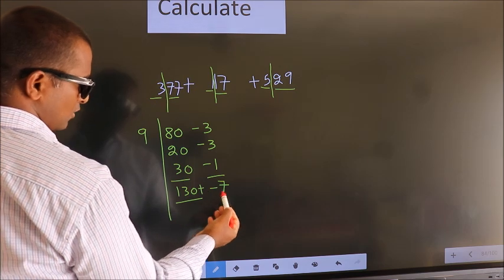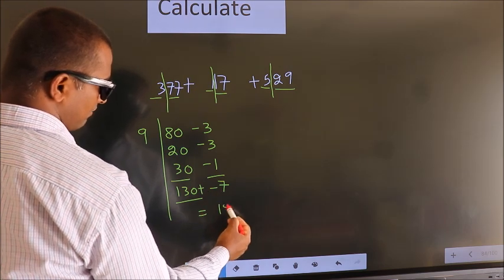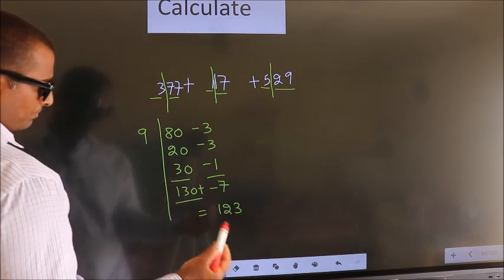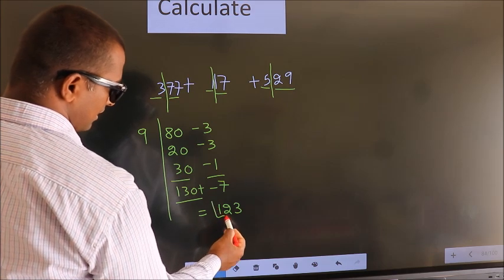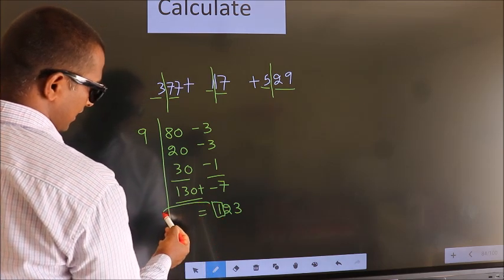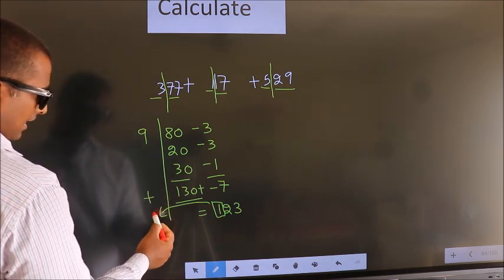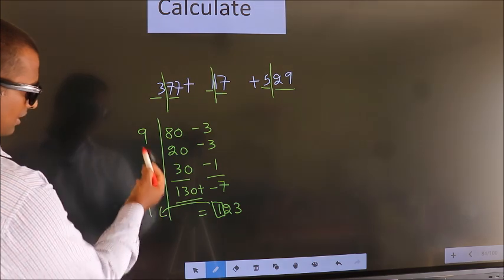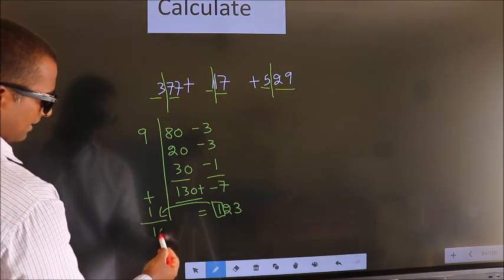Now when we add these two, we get 123. Now this third digit, shift it here and add these two. 9 plus 1, we get 10.